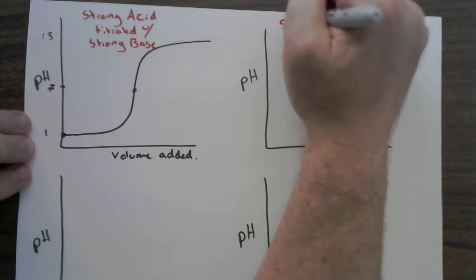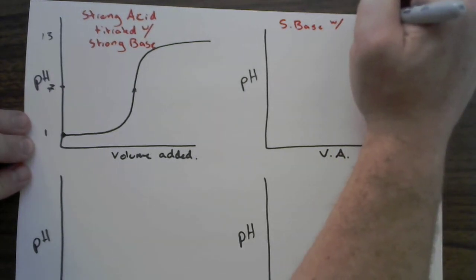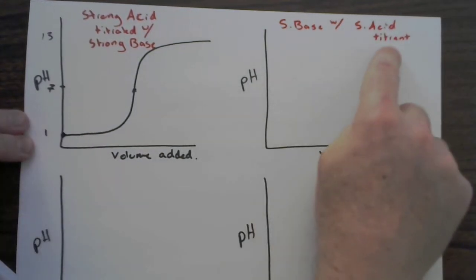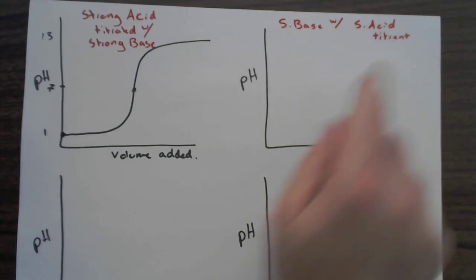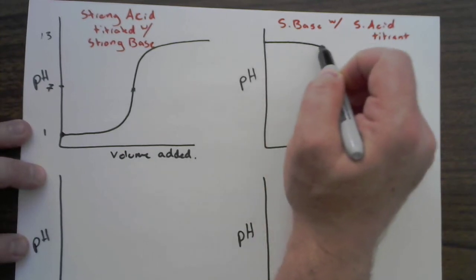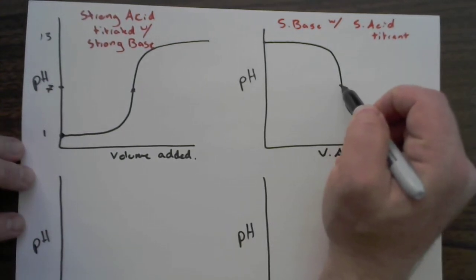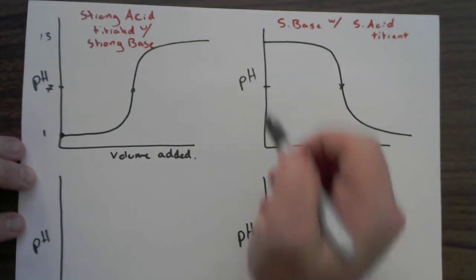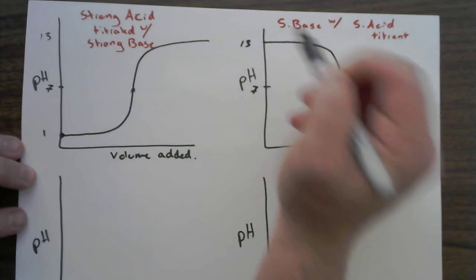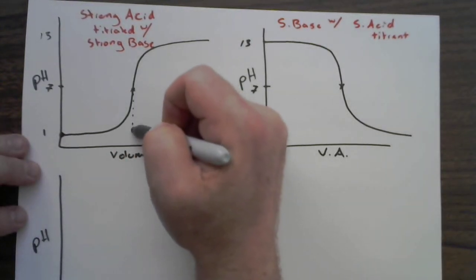So what about when you are doing a strong base with a strong acid titrant? This is gonna start way up at high pHs because it's a strong base. It's gonna go down, nice steep part of the curve and go over, and that should be pretty symmetrical also. Wherever I think is the middle of that, I'm gonna put a pH 7 right there. This could be, for example, up at a 13 and this could be down close to a one. Again, it really depends.